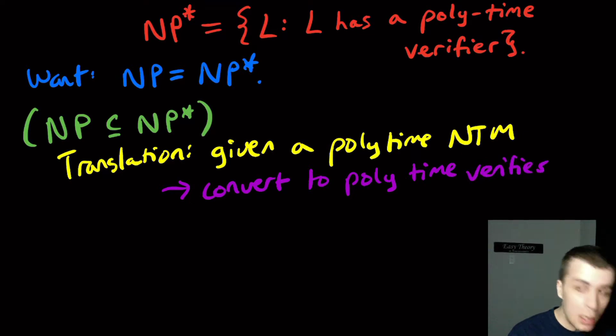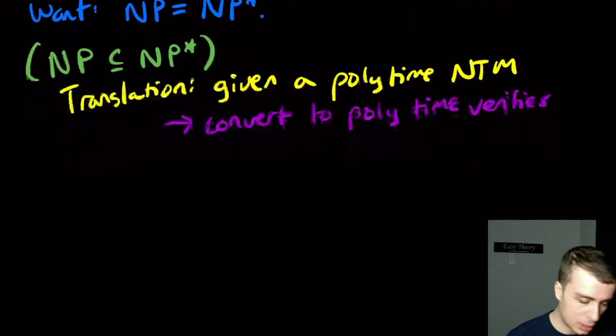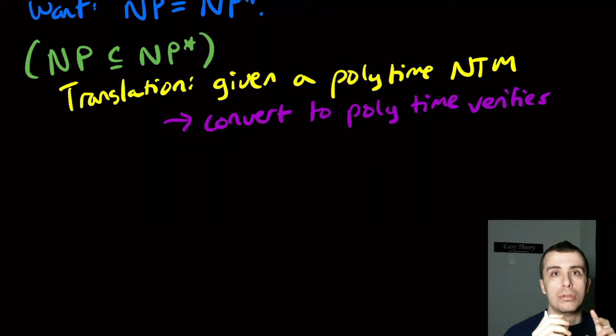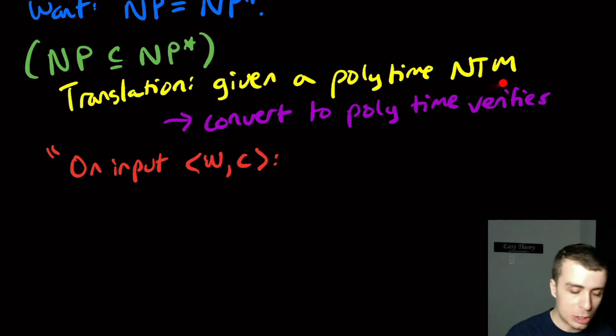So here note that the verifier has to be deterministic. So the machine can be non-deterministic, but the verifier has to be deterministic. Well, remember that the verifier has to be given two things, the input W and the certificate. So here on input W and C. So remember that W is the input to the non-deterministic Turing machine and C is the certificate. Let's actually give the non-deterministic Turing machine a name N, let's call it N.